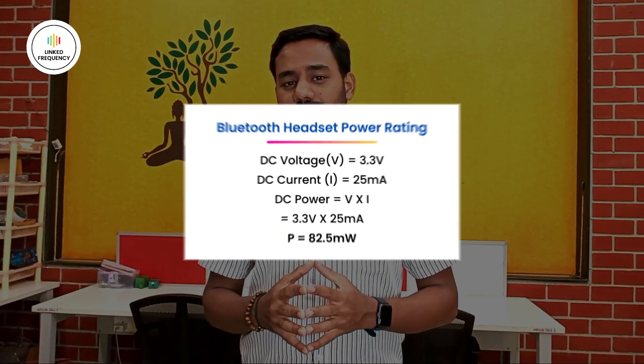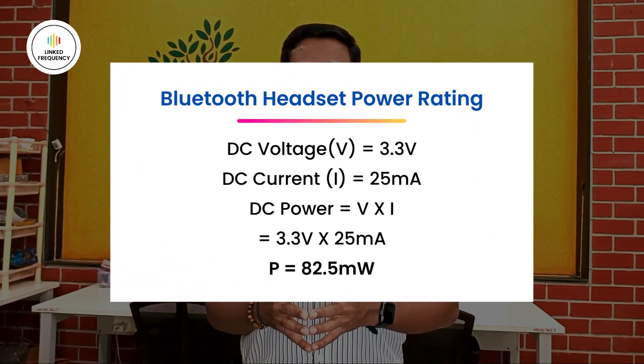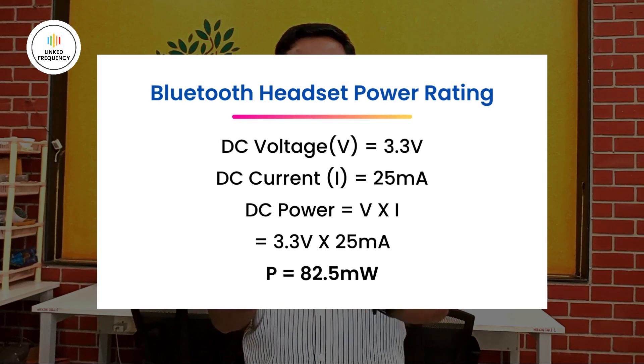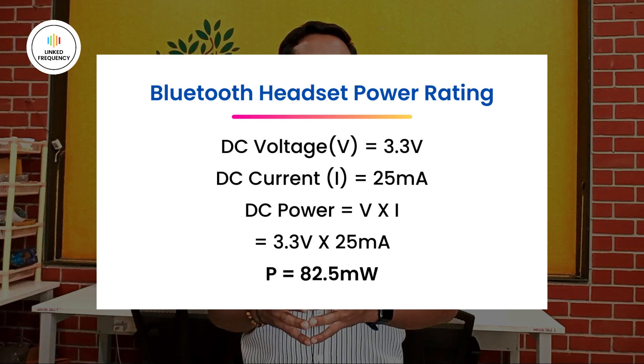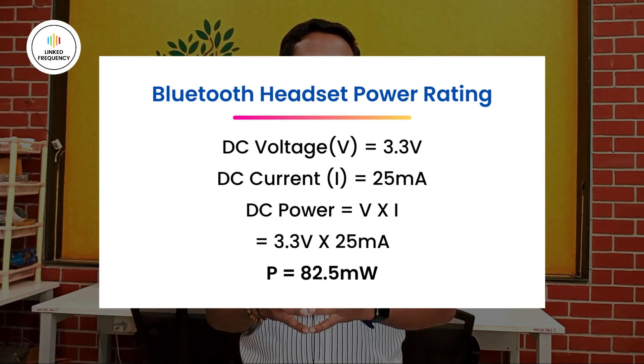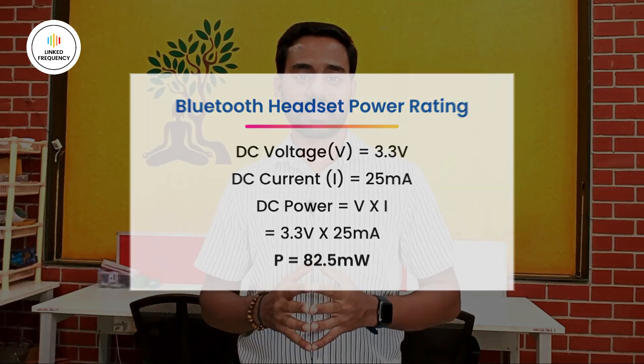Now let me consider a second example with a DC gadget. Let us assume you are using a Bluetooth beacon or Bluetooth headset with a 3.3 V DC voltage and 25 milliamperes of current consumption. The calculation of power is straightforward: P = V × I, which gives 82.5 milliwatts of power consumption. This value is very important for designing the power supply and sizing the battery for the headset. I hope with these two examples you understood how to calculate power rating for both AC and DC circuits.